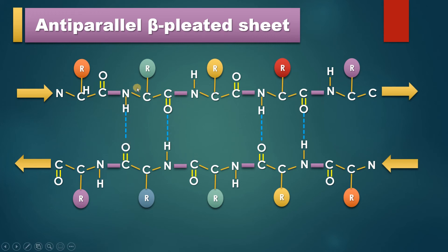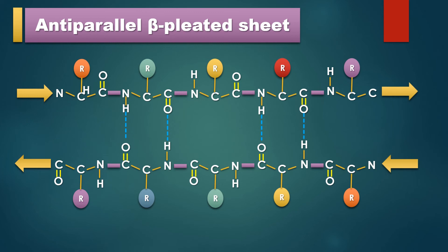You can see in anti-parallel beta pleated sheet both segments are in opposite directions. This beta pleated sheet is called extended because the distance between each amino acid is about 3.5 angstroms, compared to alpha helix where the distance between each amino acid is about 1.5 angstroms. So beta pleated sheet is in a zigzag, extended manner and very strong because of many hydrogen bonds.